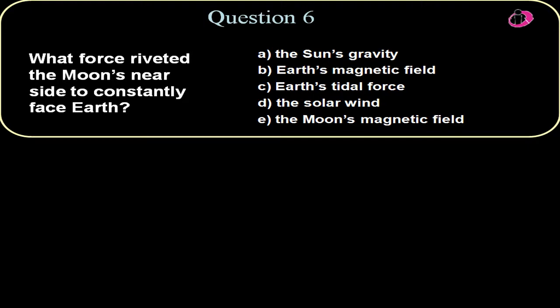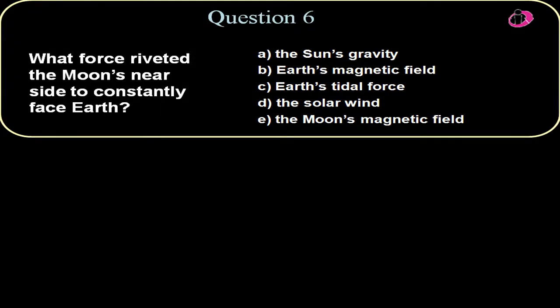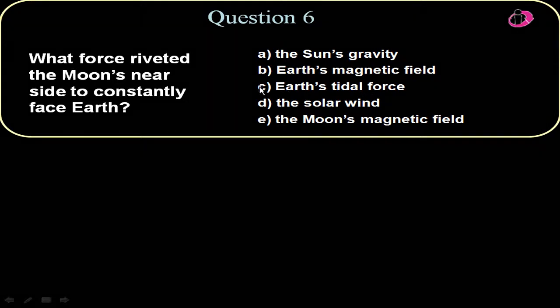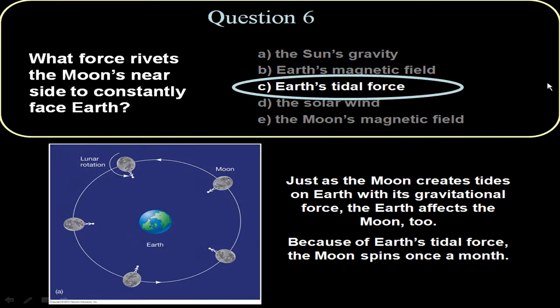The Earth's tidal effect, the main effect on the moon is that it always is showing the same face towards us. So it's the Earth's tidal force that has pulled the moon's face to always face towards us. And so the answer here would be C. Just as the moon creates tides on Earth, the Earth affects the moon too.